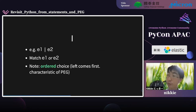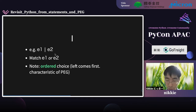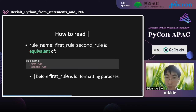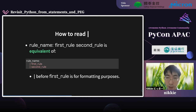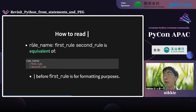Next, pipe: E1 | E2 matches E1 or E2, but as a feature of PEG, this is an ordered choice — left comes first. Rules using pipe may be written side by side, but you may split onto new lines for each expression. To do so, put a pipe before the first expression — there is no semantic difference. This format and that format are equivalent.